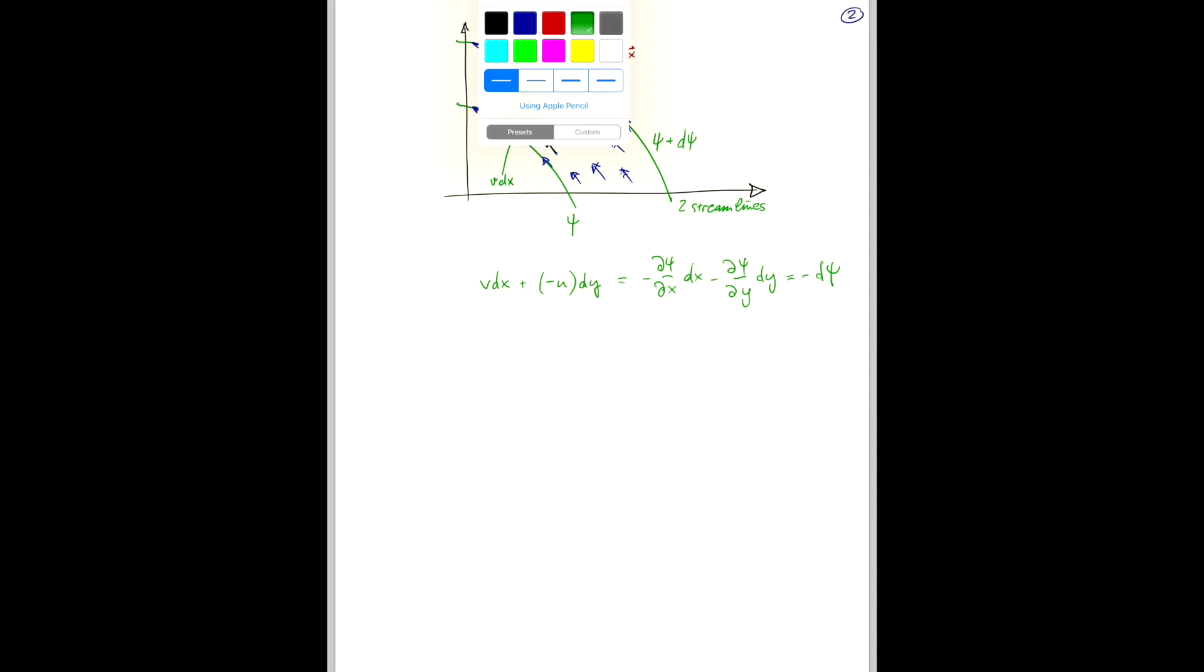So, what we've done here is basically consider the volume flux between two streamlines. So, the physical interpretation here is that the volume flow rate between two streamlines is just the difference between their psi values.